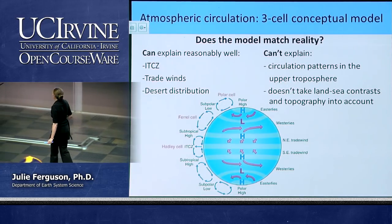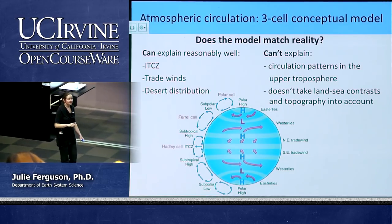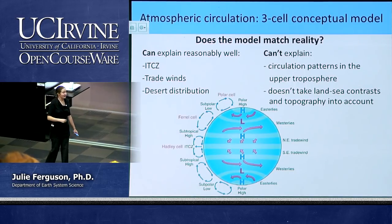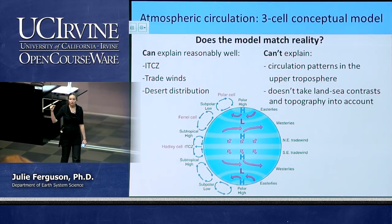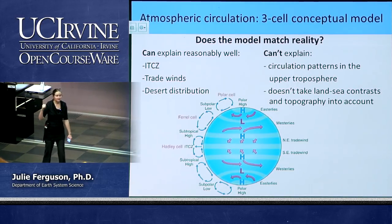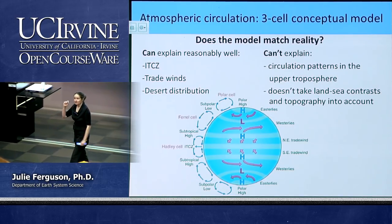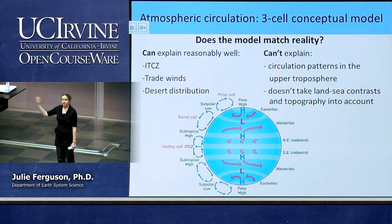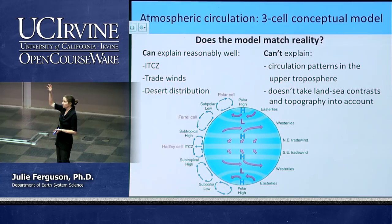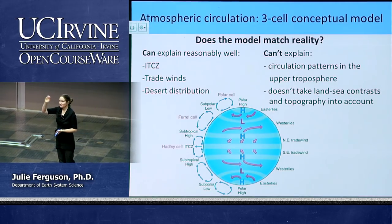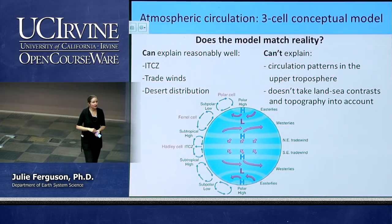Let's start with our three-cell conceptual model. You are going to be so fed up of seeing this by the end of the quarter, but it's really important and it's amazing because it explains so much of what we observe in our satellite images of the earth. It explains why we have our band of cloud — what we call the intertropical convergence zone, or ITCZ — that runs along the equator. It explains why we have our trade winds, our easterly winds either side of the equator, why we have our westerlies, why storms hit us from the Pacific rather than from the other direction, and why we have our deserts where we have them.